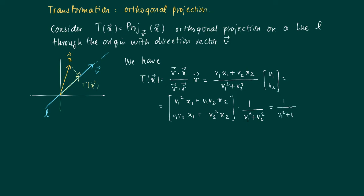So this equals 1 over v1 squared plus v2 squared times, well here there is a matrix-vector product. If we take out the x1 and x2, we get the following matrix,